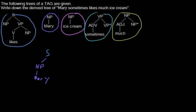Then we had applied the adjunction into this node. So we will have parts of this tree here. So it's VP, adverb, sometimes, and VP.